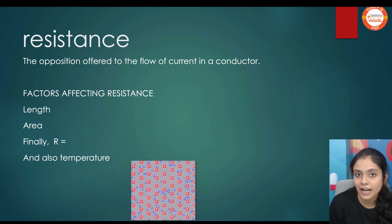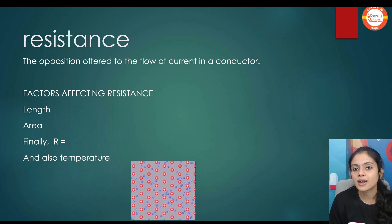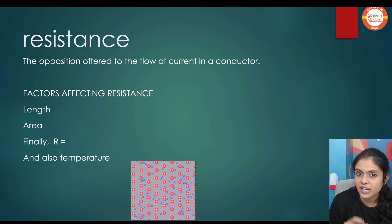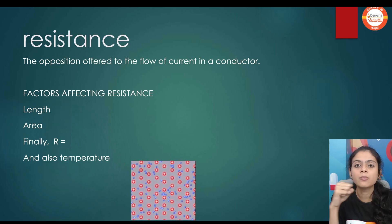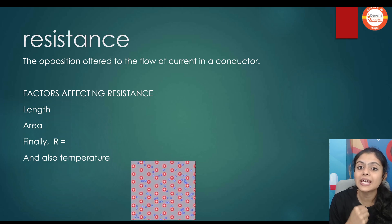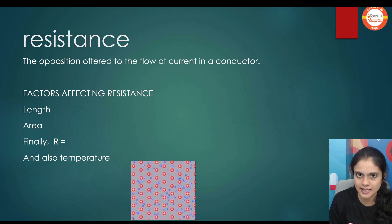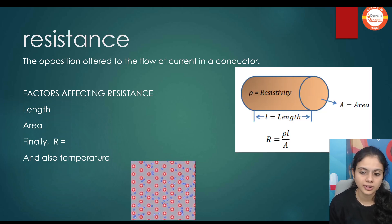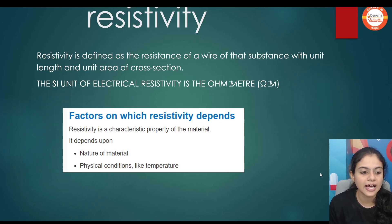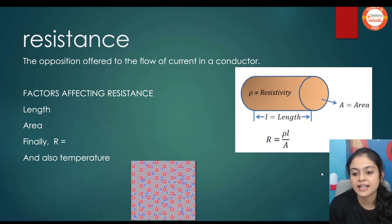By this we write the resistance formula: R is equal to rho L by A. Also, if we increase the temperature, random motion of the particles increases, hence there will be an increase in resistance. The formula is on your screen — you can see that.